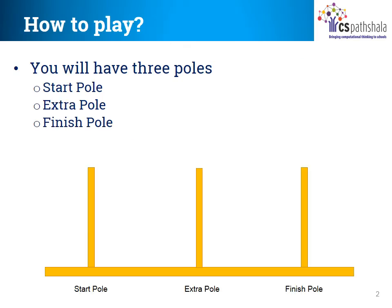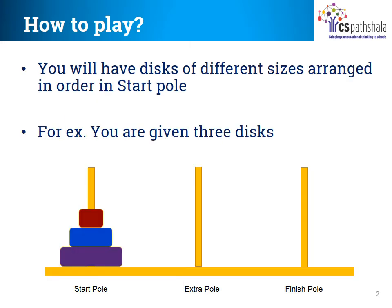There are 3 poles or towers in this puzzle. The first pole is called the start pole, the last pole is called the finish pole, and the second pole is called the extra pole. Along with the poles, there are a few discs of different sizes. In the beginning of the puzzle, they are all arranged on the start pole. In the picture you can see there are 3 discs of increasing sizes placed on the start pole.